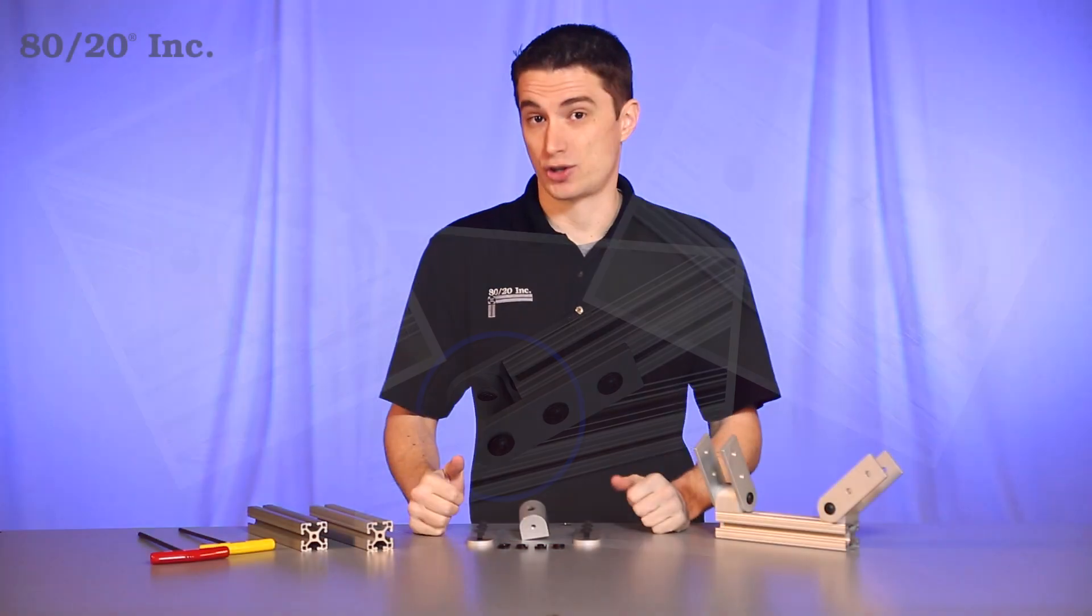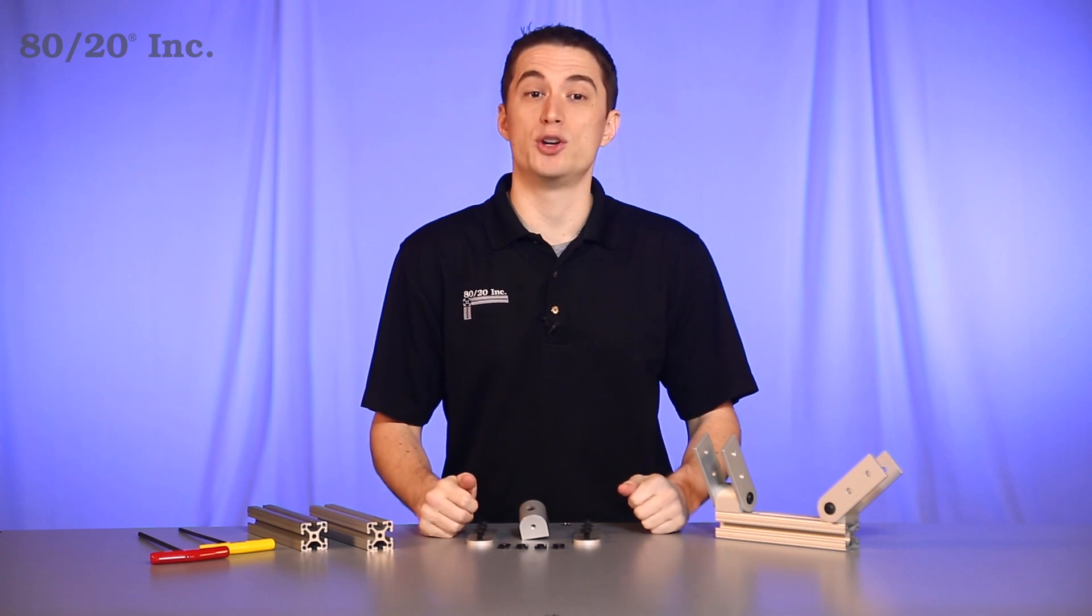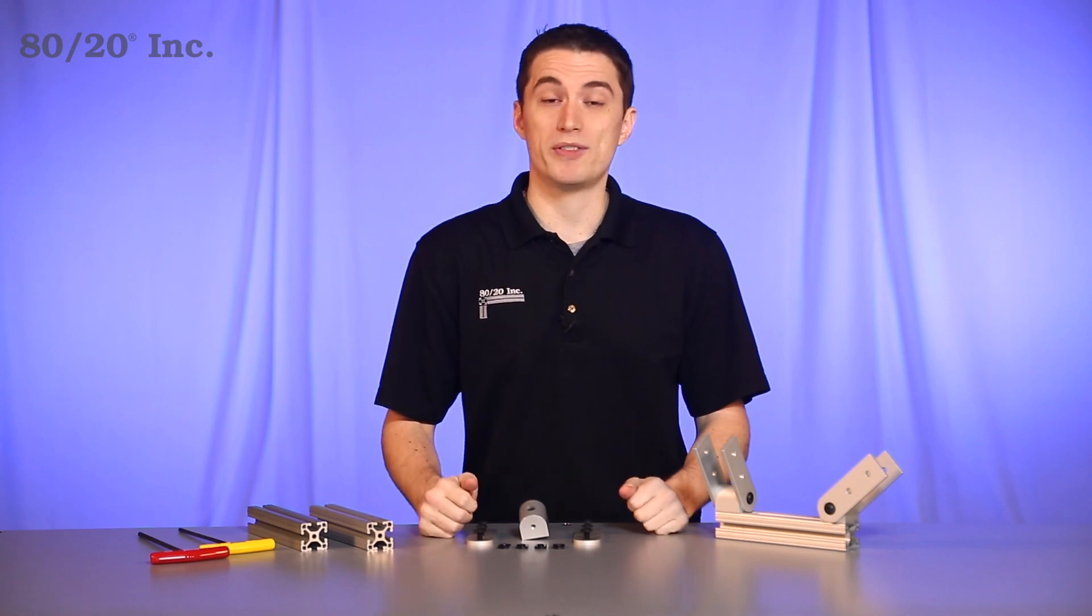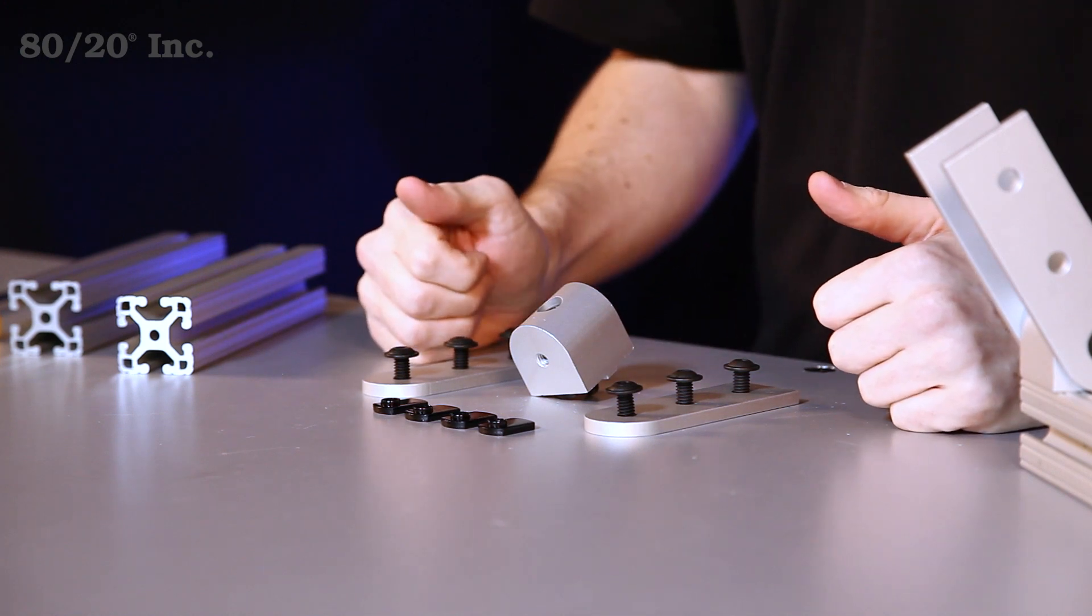Now when it comes to using the Structural Pivot, you have a few options to choose from. The first choice is how you receive your part. The Structural Pivot can be purchased as standalone parts or as a pre-assembled part ready to install as seen here.